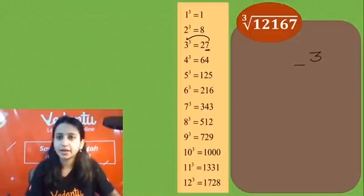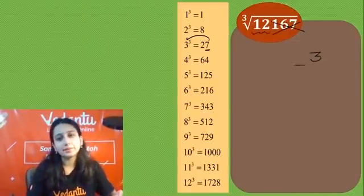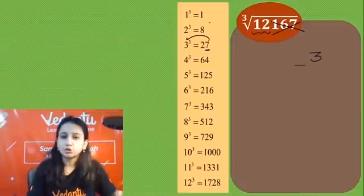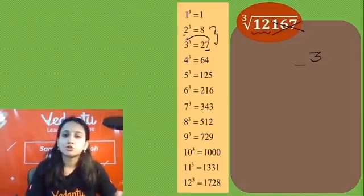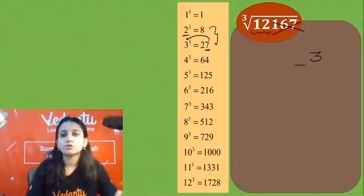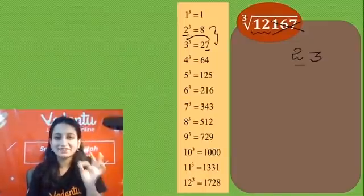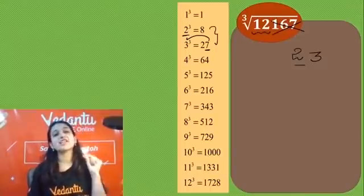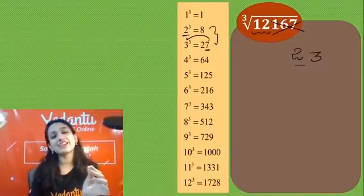Next example: ones digit gives us 3. Simple — just one digit remains. Discard the last 3 digits, and 12 is left. See where 12 lies — it's right there, between 8 and 27. Take the smaller one: 2. So 23 is the answer! Kitni amazing, kitni simple si trick hai!